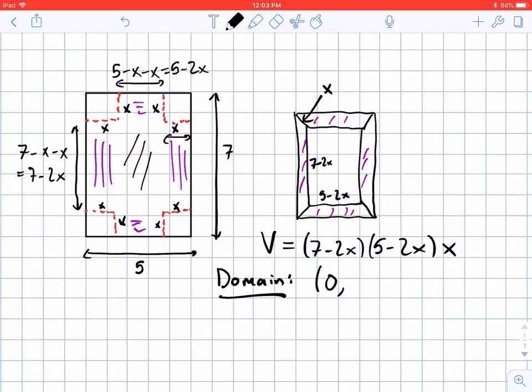Now what's the most I could make X? Well you notice on this short side, the 5, if I cut all the way to the middle then I'm also not going to be able to fold up anything, I've just gotten rid of an entire side. So folding all the way to the middle is no good so I need the domain to not include 2.5, that's halfway across 5. So my X can only lie between 0 and 2.5.